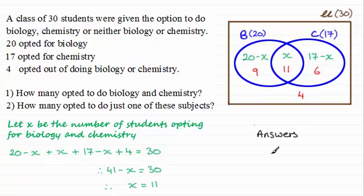And for the first question we've got how many opted to do biology and chemistry. Well that's going to be this section here. And that's going to be x which is 11. And for number two, how many opted to do just one of these subjects? Well it would be 9 that did biology only and 6 that did chemistry only. So 9 plus 6 gives us a total of 15.